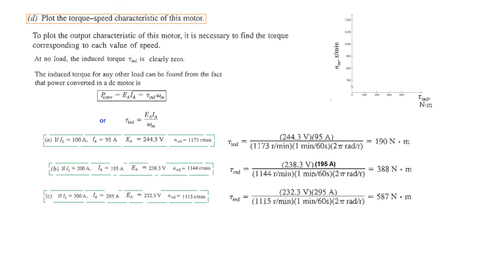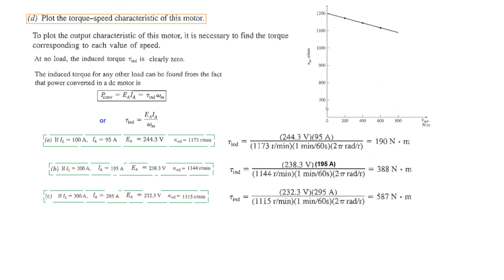Now we plot the torque-speed characteristics with induced torque on one axis and RPM on the other. At 1173 RPM the torque is 190 N·m; at 1144 RPM the torque is 388 N·m; and at 1115 RPM the torque is 587 N·m. This gives a nearly linear downward-sloping torque-speed curve. I hope this gives you an understanding of how to solve this type of problem and plot the torque-speed characteristics. Thank you.